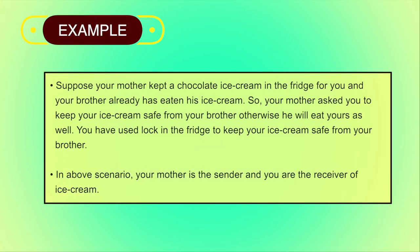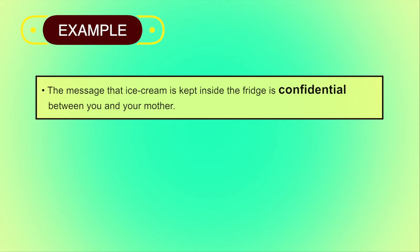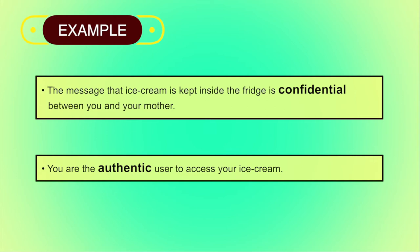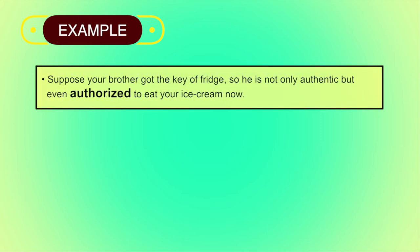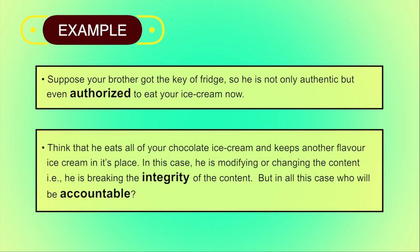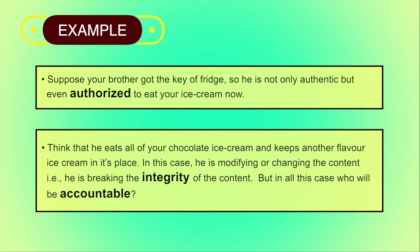You can understand all these objectives with one simple example. Suppose your mother kept a chocolate ice cream in the fridge for you, and your brother has already eaten his ice cream. Your mother asked you to keep your ice cream safe from your brother, otherwise he will eat yours as well. You used a lock on the fridge to keep your ice cream safe. In this scenario, your mother is the sender and you are the receiver of the ice cream. The message that ice cream is kept inside the fridge is confidential between you and your mother. You are the authentic user to access your ice cream. If your brother wants that ice cream, he should take permission from you or your mother. Suppose your brother got the keys of the fridge — he is now not only authentic but even authorized to eat your ice cream. If he eats all of your chocolate ice cream and keeps another flavor in its place, he is modifying the content — that is, he is breaking the integrity of the content.